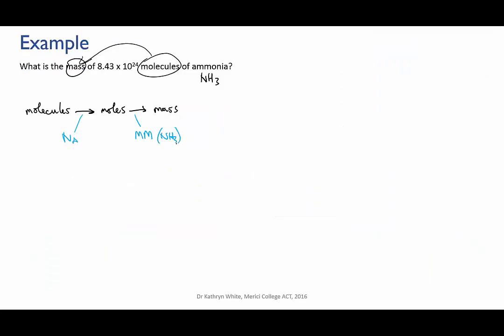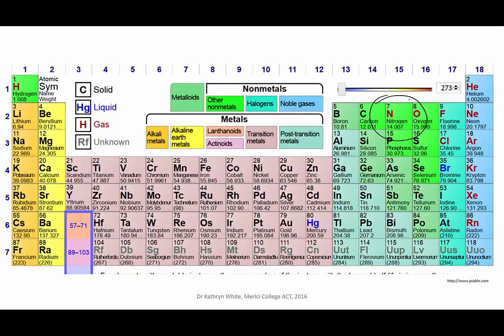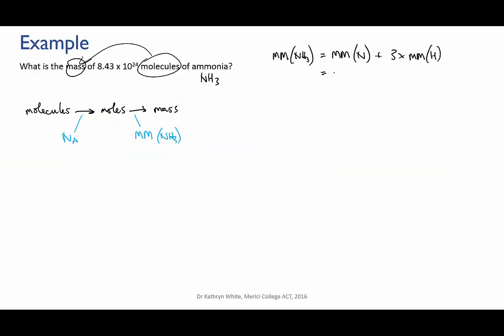Now we know Avogadro's number, that's 6.022 times 10 to the 23, but I don't know the molar mass of ammonia off by heart, so I'm going to have to calculate that. So the molar mass of ammonia is going to be equal to the molar mass of nitrogen plus three times the molar mass of hydrogen, because each ammonia molecule is made up of one nitrogen and three hydrogens. So I check the periodic table for the molar masses, and I plug that into the calculator, and that equals 17.031 grams per mole.